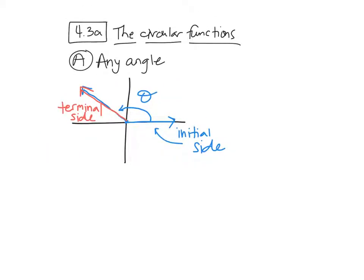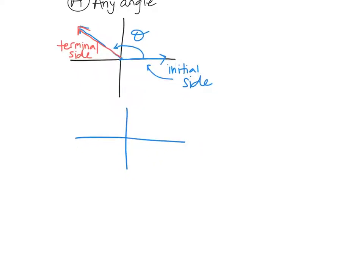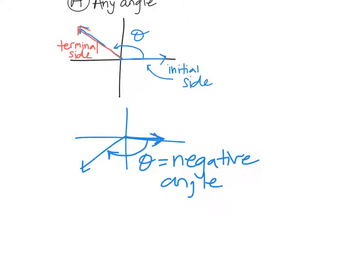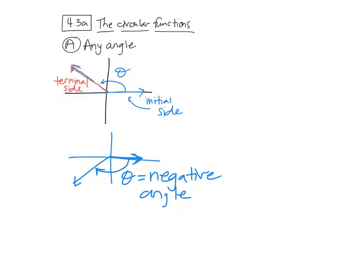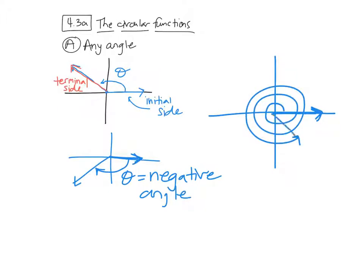So if you go the other direction — let's say we have a Cartesian plane and we decide to start right here, same initial side, but we go this direction — then theta would be a negative angle. You can go both directions. And you don't have to stop; you can keep going. You can have your initial side here and go around a whole bunch of times, and then you have that angle. That would be a positive angle, way over 360.